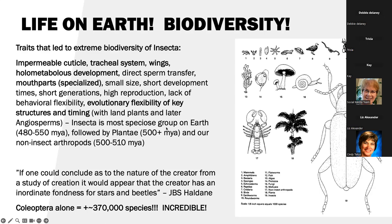As far as timing is concerned, Insecta — the most specious group on Earth — arose a little more than 550 million years ago. Plantae, or the plants, was a little more than 500 million years ago. So both of these are evolving at the same time. And our non-insect arthropods are right in there as well. I do love this quote: 'If one could conclude as to the nature of the creator from a study of creation, it would appear that the creator has an inordinate fondness for stars and beetles.'